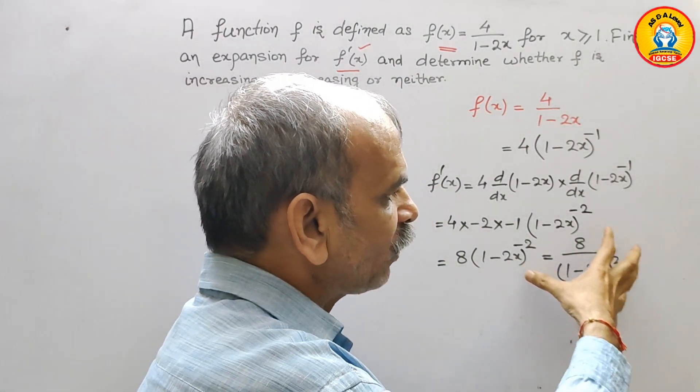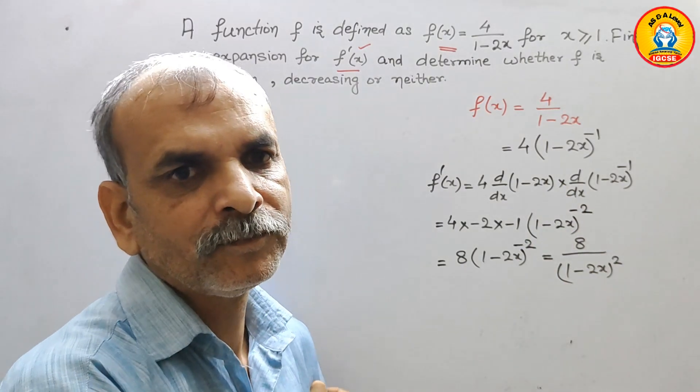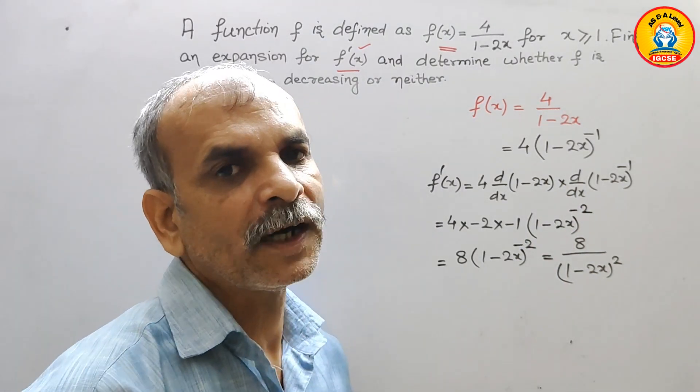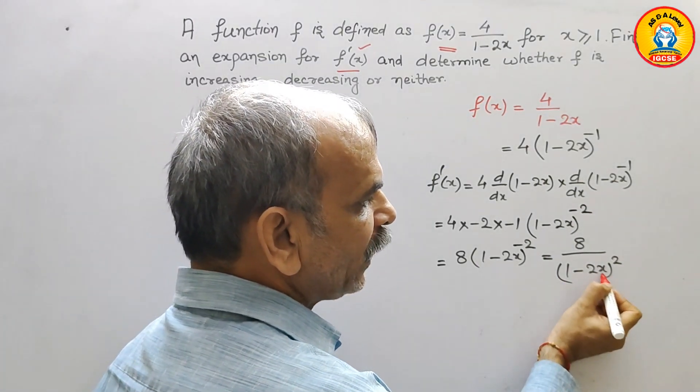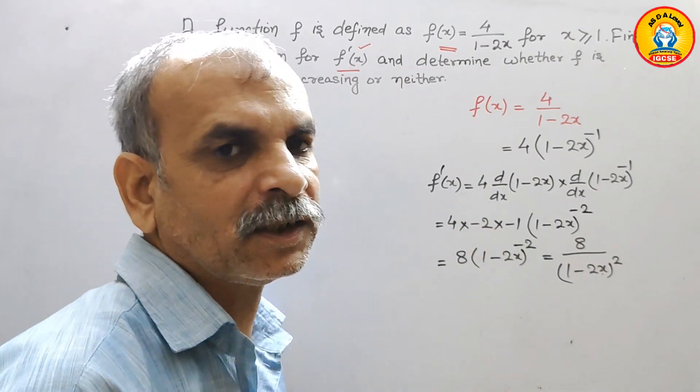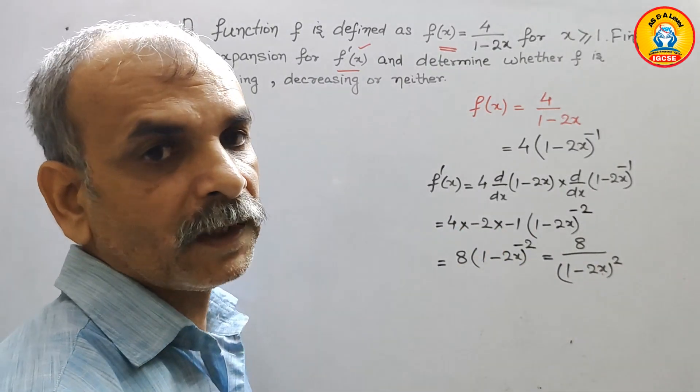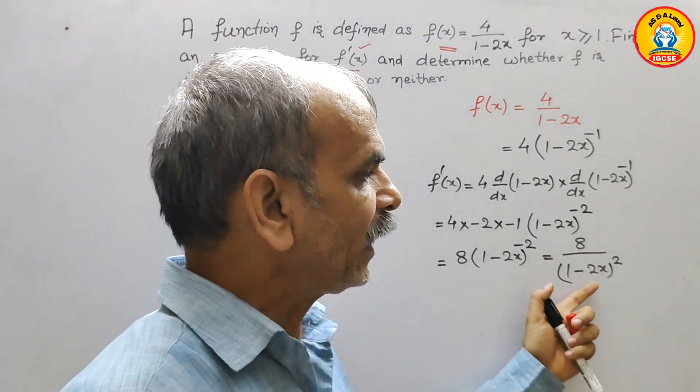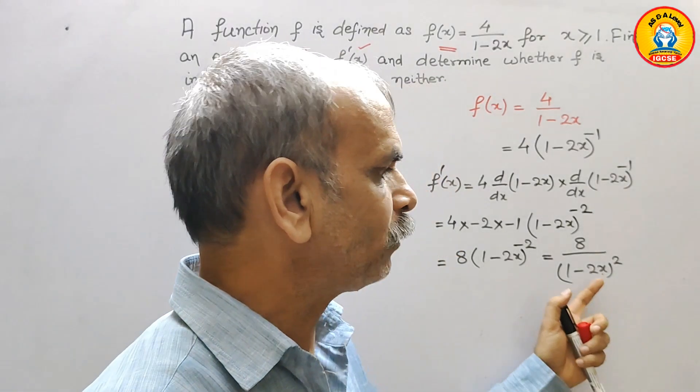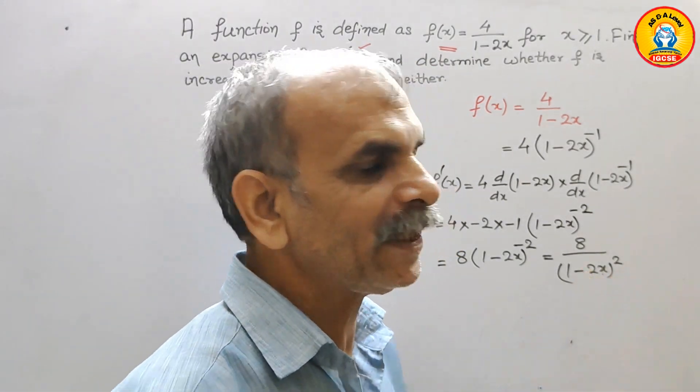So by seeing this, we can find it out whether it is increasing, decreasing, or neither. Now if you see here, if you take any value of x, you will get plus only because here square is there.